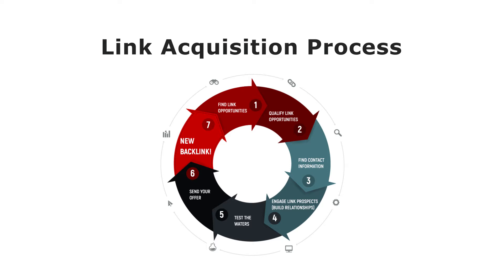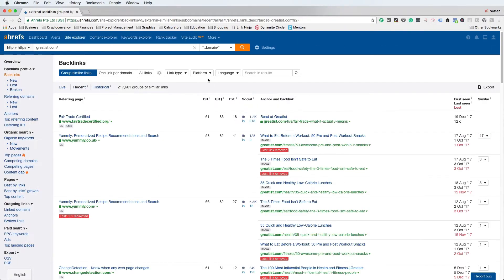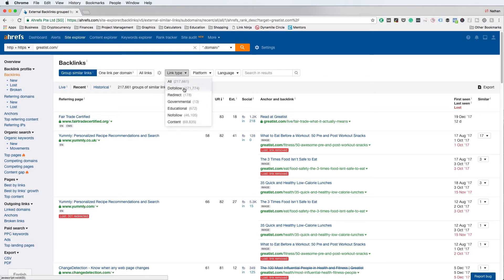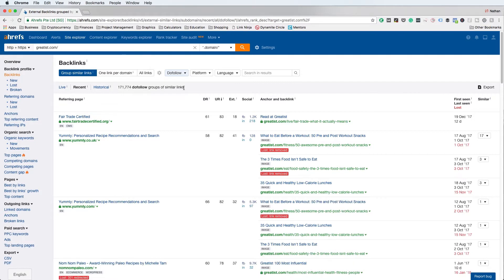The objective is to show you a link acquisition strategy you can use to actually get backlinks that your competitors have. All it takes is to first identify the type of link your competitor has, and then use the appropriate strategy for that particular link type. You only want to target do-follow backlink opportunities.